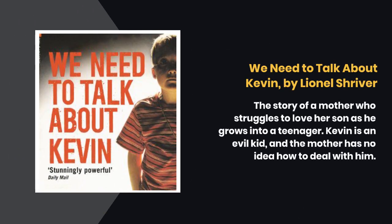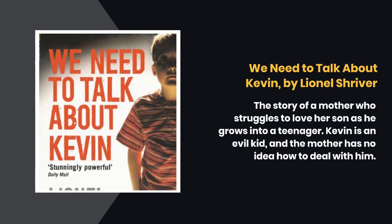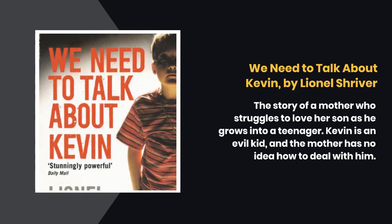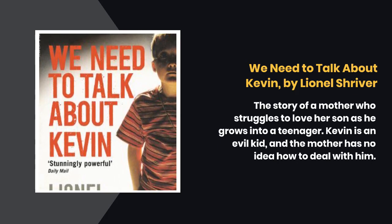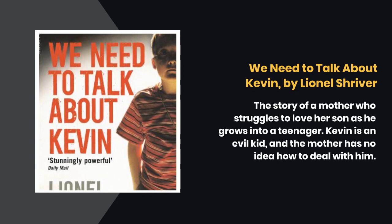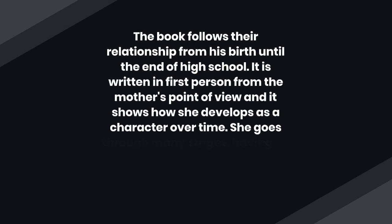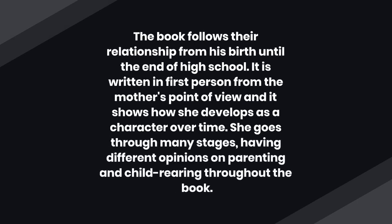We Need to Talk About Kevin by Lionel Shriver. This is the story of a mother who struggles to love her son. As he grows into a teenager, Kevin is an evil kid and the mother has no idea how to deal with him. The book follows their relationship from his birth until the end of high school. Written in first person from the mother's point of view, it shows how she develops as a character over time, going through many stages and having different opinions on parenting and child-rearing.